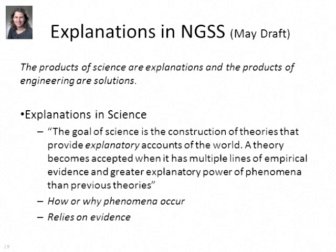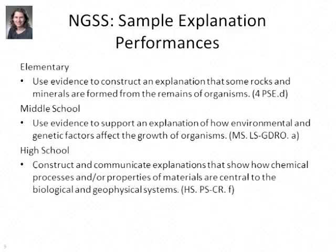The products of science are explanations and the products of engineering are solutions. Specifically, the goal of science is the construction of theories that provide explanatory accounts of the world. A theory becomes accepted when it has multiple lines of empirical evidence and greater explanatory power of phenomena than previous theories. Two main ideas emerge here: how or why phenomena occur, and this idea that it's relying on evidence.